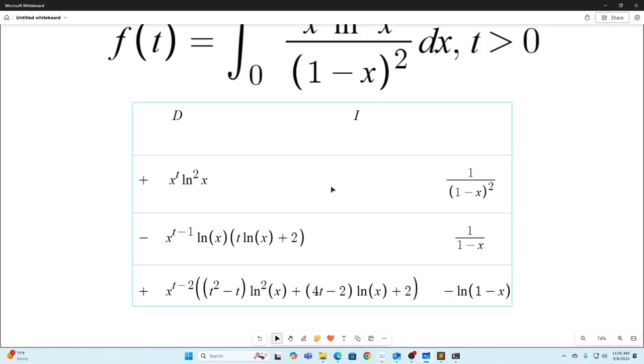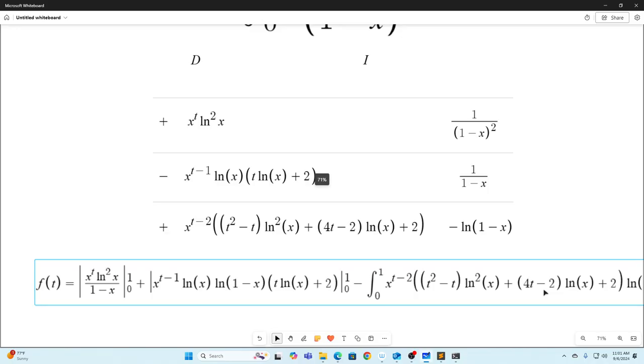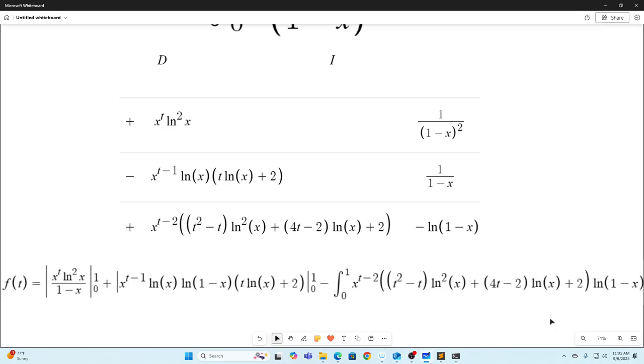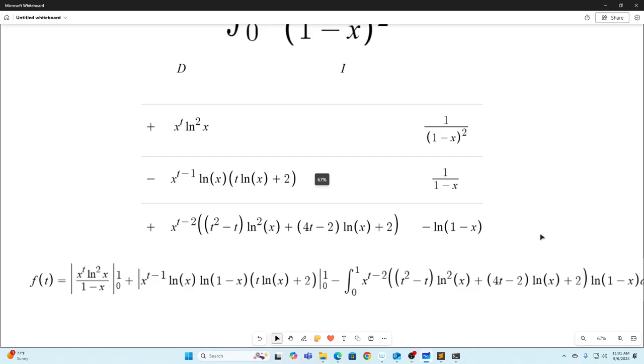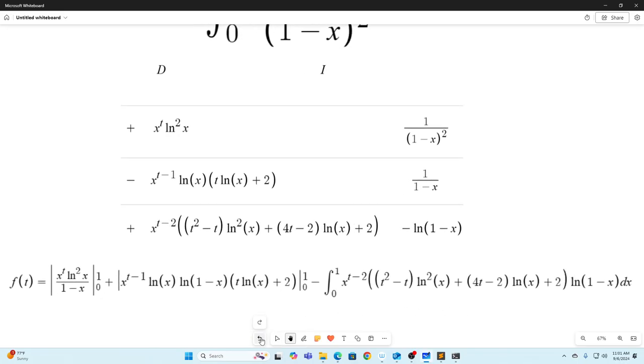So it's going to be this times this evaluated at the bounds, which are 0 and 1, minus this times this, which just makes it a plus this times this evaluated at the bounds. And then plus the integral from 0 to 1 of the product of these two functions. So this is what we end up with. And I'm sorry if this is a little bit hard for anybody to see. There's a lot of stuff I have to fit on the screen here.